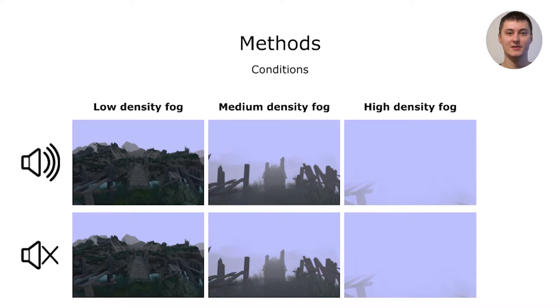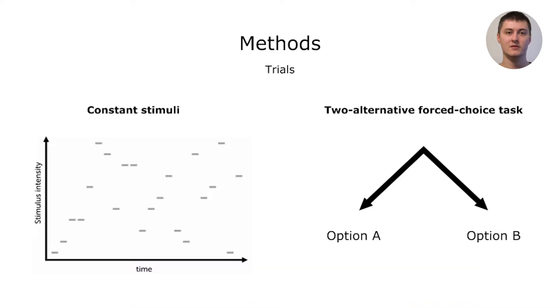We performed a within-subject study with six conditions: three conditions for each degree of visibility, so low, medium, and high density fog, with audio and without audio. To determine if detection thresholds varied across different conditions, we adopted the method of constant stimuli in a two-alternative forced choice task.